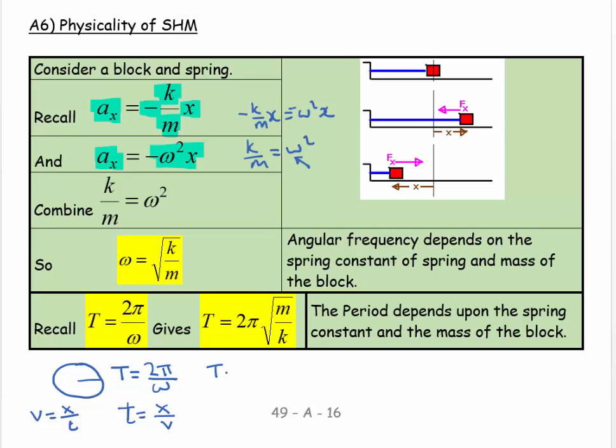So T equals 2π over the square root of k over m. We don't like triple deckers, so let's rearrange: this would be 2π times the square root of m over k.